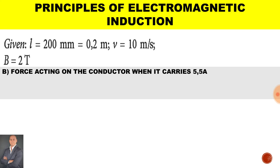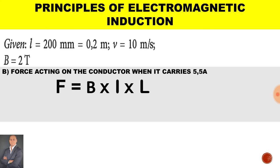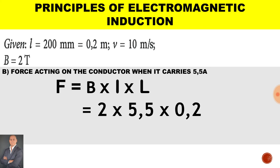To calculate the force acting on the conductor when it carries 5.5 amps, it will be equal to the magnetic flux density multiplied by the current and multiplied by the length of the conductor. Therefore, we end up with a force of 2.2 Newtons.